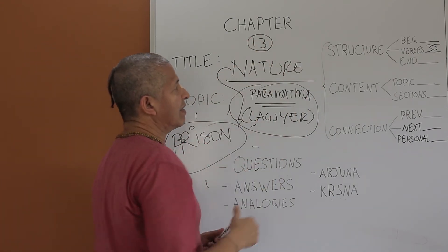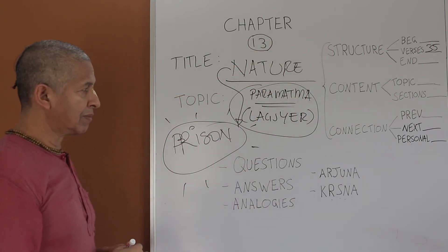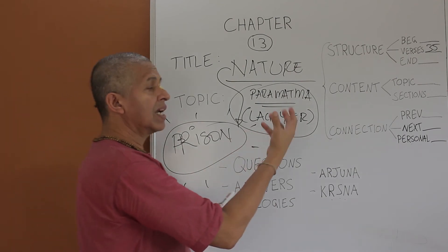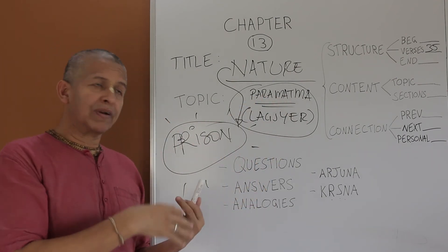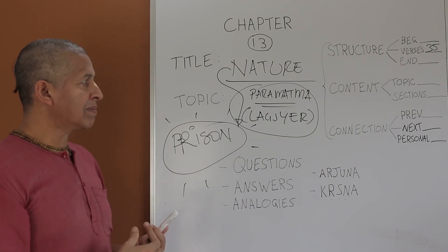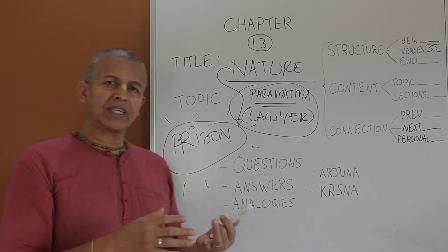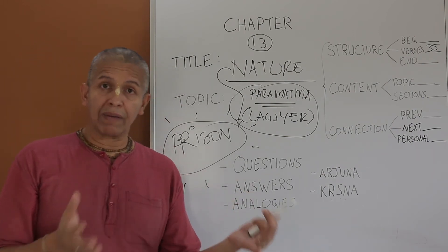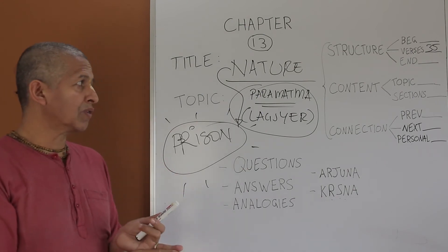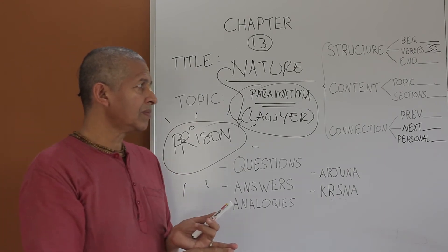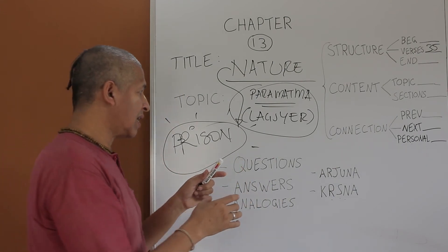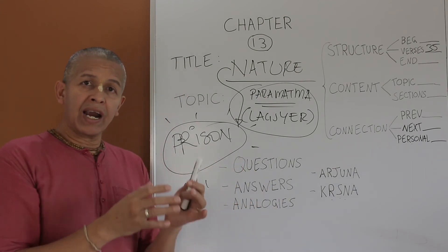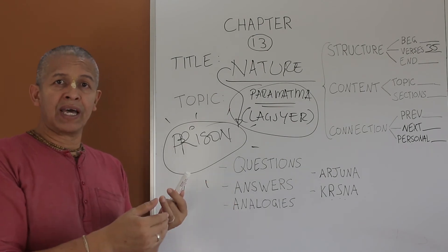That's the basic structure of the chapter. The topic is Krishna and his kindness being with us in prison, in the form of Paramatma. The different sections, there is a long explanation about Paramatma, the vision of the person who can obtain freedom. Also, the answers that Arjuna is looking for are explained very carefully by Krishna.